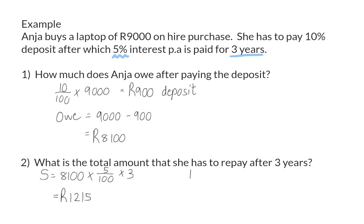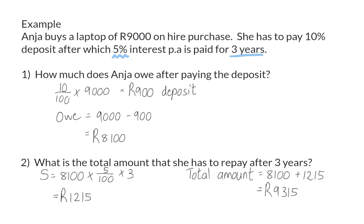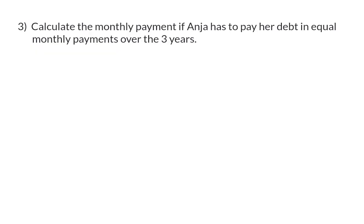This means that she will have to pay an interest amount of 1,215 rand. Remember that she still owes 8,100 rand and then needs to pay the extra interest of 1,215 rand, which means that after three years she has to repay 9,315 rand.